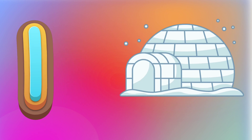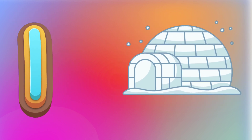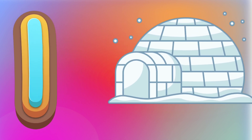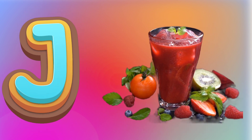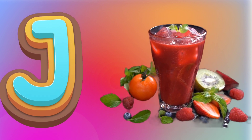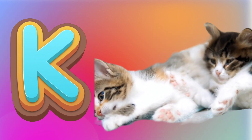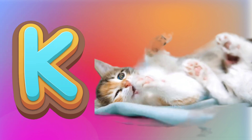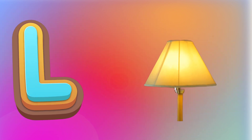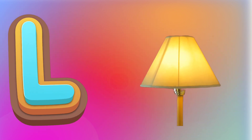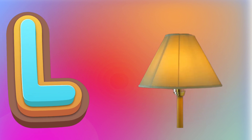I is for Igloo. I, I. Igloo. J is for Juice. J, J. Juice. K is for Kitten. K, K. Kitten. L is for Lamb. L, L. Lamb.